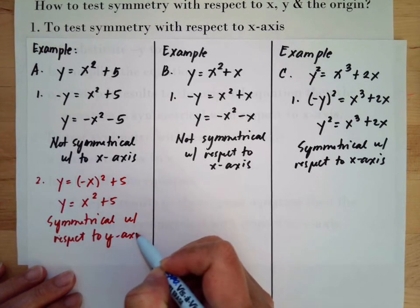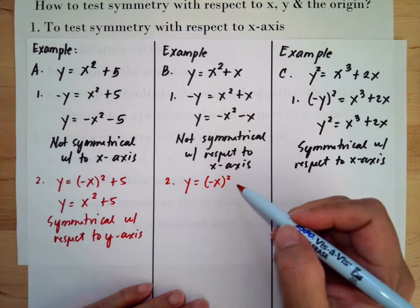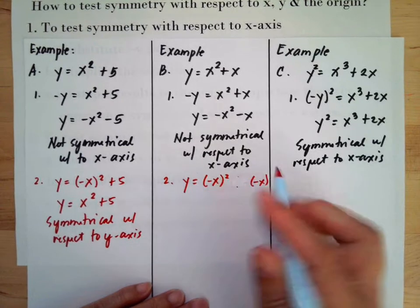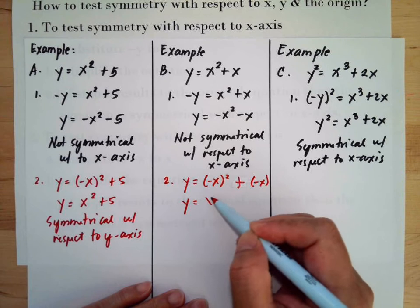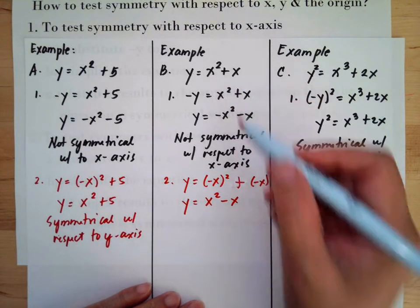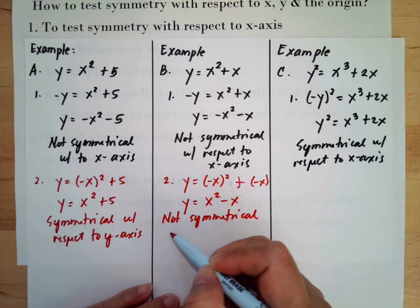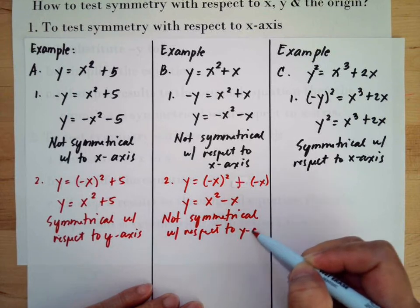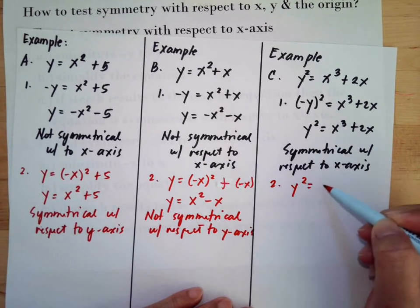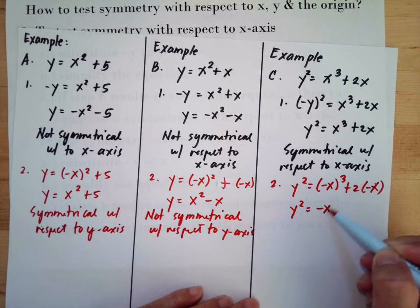For the second one, we substitute negative x. That is plus — so negative x squared is still x squared, but this is negative x, so the second x-term changes. It is not the same as the original equation, so this one is not symmetrical with respect to the y-axis. For the third one, substituting negative x into x plus 2 gives minus x; simplified this becomes negative x cubed minus 2x, so this one is not symmetrical.